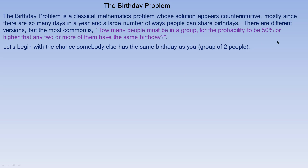There are different versions, but one of the most common is: how many people must be in a group for the probability to be 50% or higher that any two or more people have the same birthday? So let's start with just a group of two.